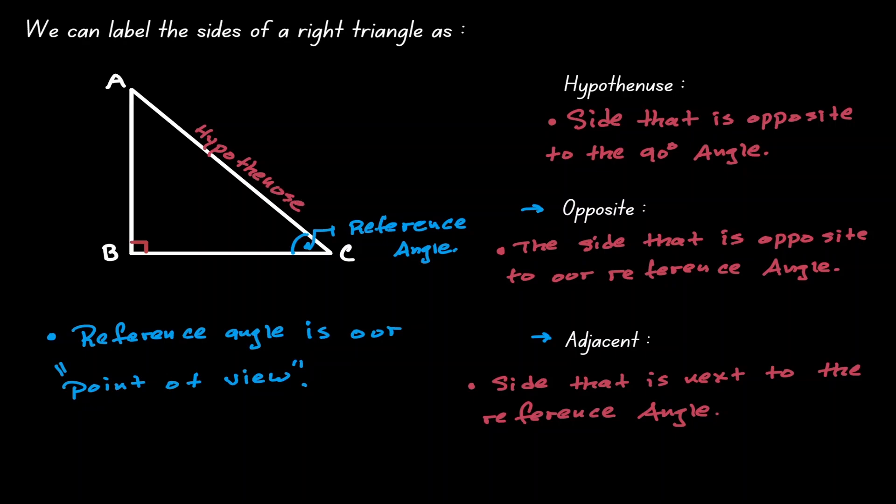But because we have changed our reference angle, notice that now the side that is opposite to our reference angle is AB. Therefore, from the point of view of the reference angle, AB we're going to label as our opposite.